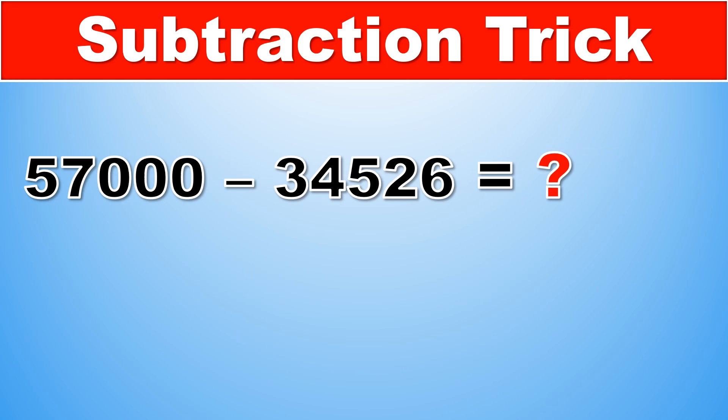Let's take a look at our final problem: 57,000 minus 34,526. This one might look a little bit more complicated because both numbers are five digit, but it works the same way. Again, the first part of the answer is to split the number 34,526 into two parts, but instead of the first part being one digit, we're going to make that part two digits.